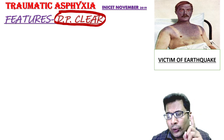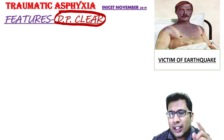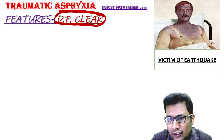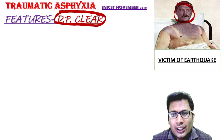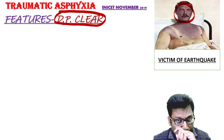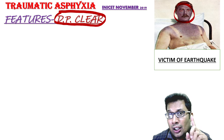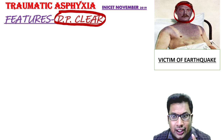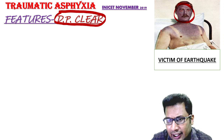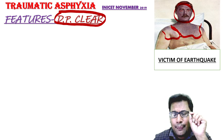What are the three important features? First, you can see deep cyanosis. You can also see petechial hemorrhages. And there is a clear line of demarcation. So those are the three important features.